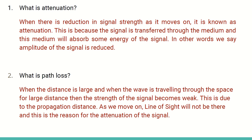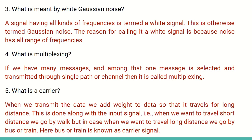Once you move on, the line of sight will not be there. Line of sight is something you can see in a straight line; if you miss it, you have lost the line of sight. Since the line of sight is also not there, it is the reason for attenuation of the signal, and this is what is referred to as path loss. What is white noise or Gaussian noise? A signal having all kinds of frequencies is called a white signal, otherwise called Gaussian noise. This noise has all range of frequencies.